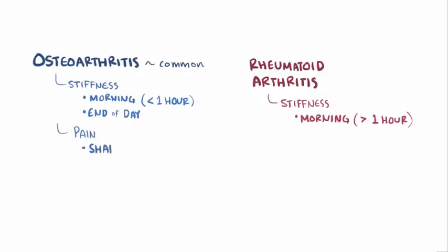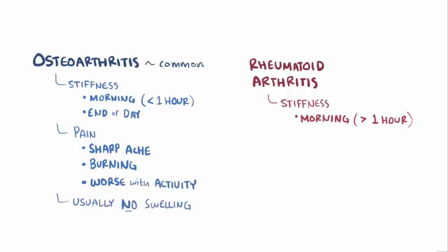The pain in osteoarthritis is usually a sharp ache or burning sensation which also gets worse with prolonged activity, but usually the joints don't swell, whereas rheumatoid arthritis typically involves painful swelling.